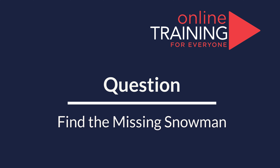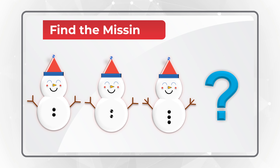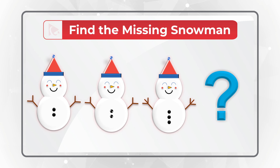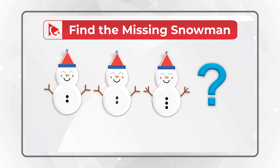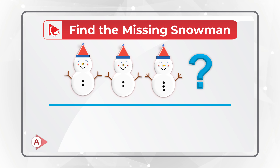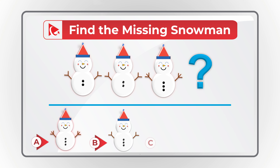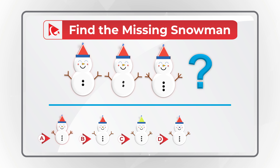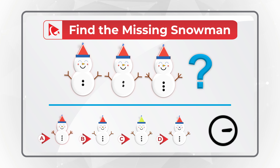Here's a question for you to test your skills. You need to find the missing snowman — please take a close look at the sequence and see if you can come up with the right answer by selecting one of four choices: A, B, C, and D. Give yourself a little bit of time and once ready, post your answer in comments.